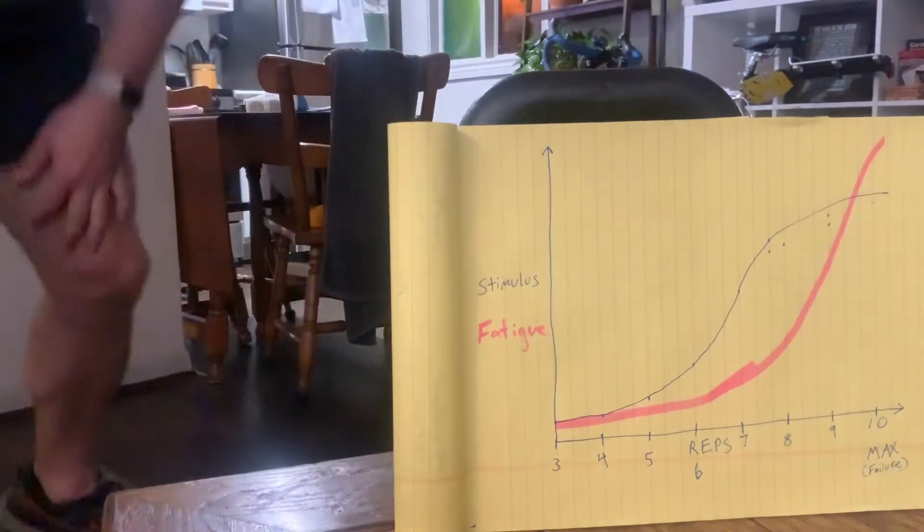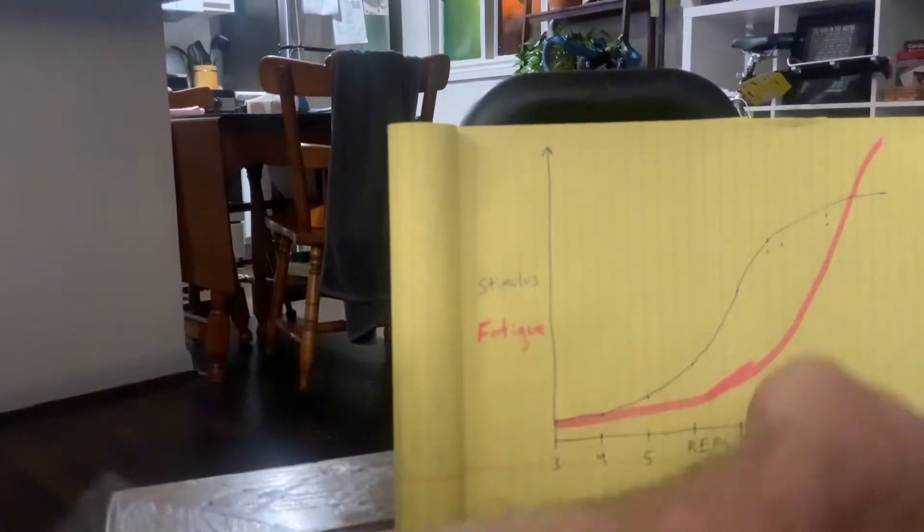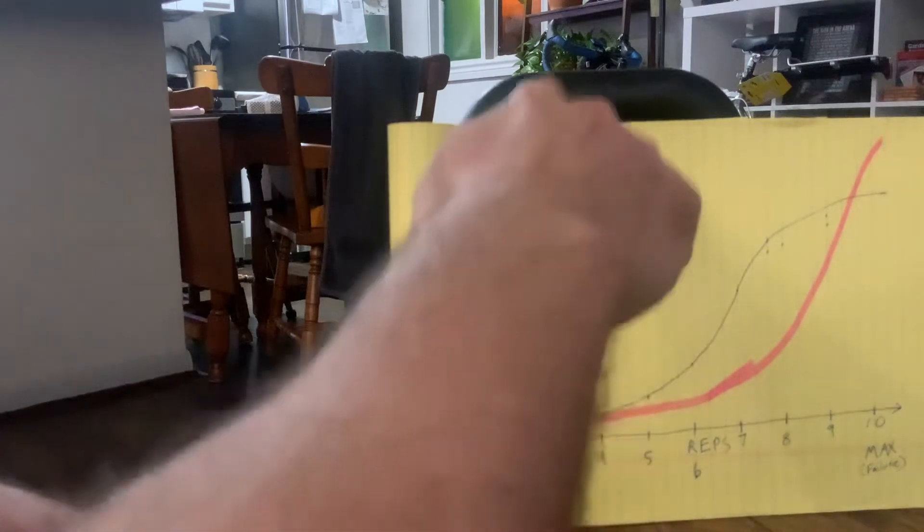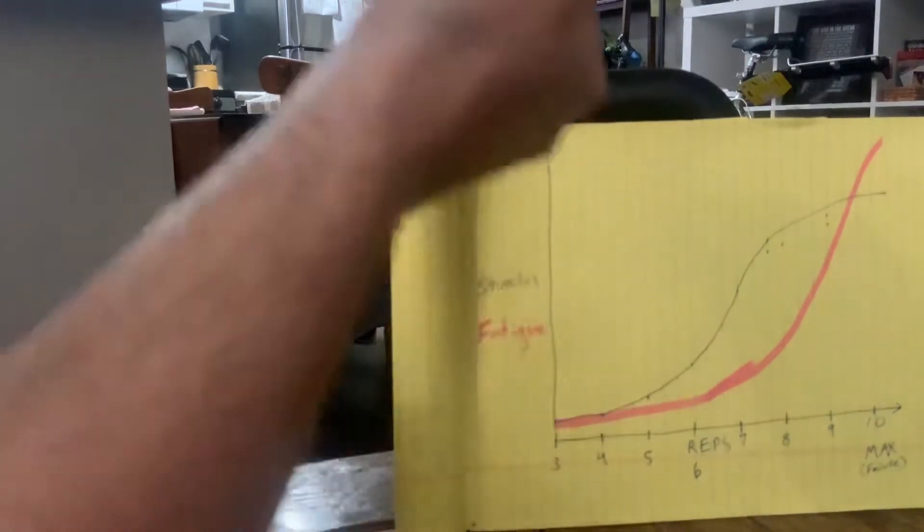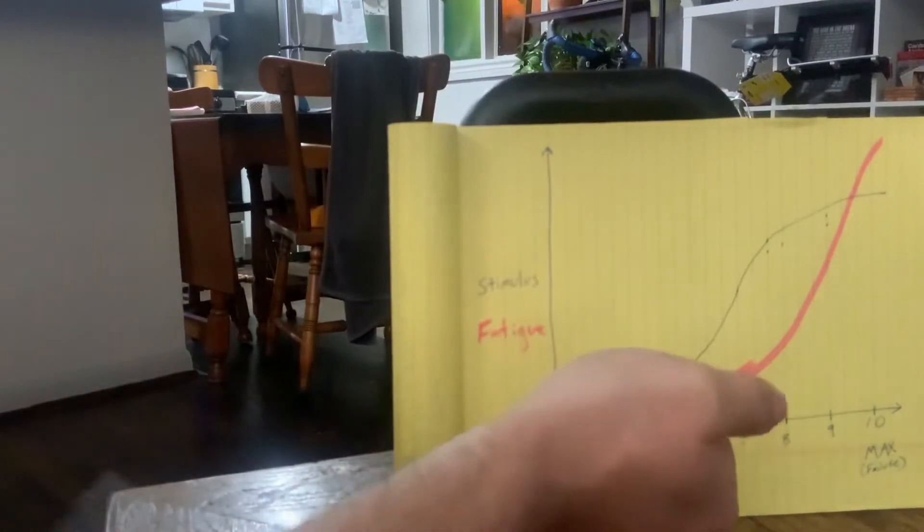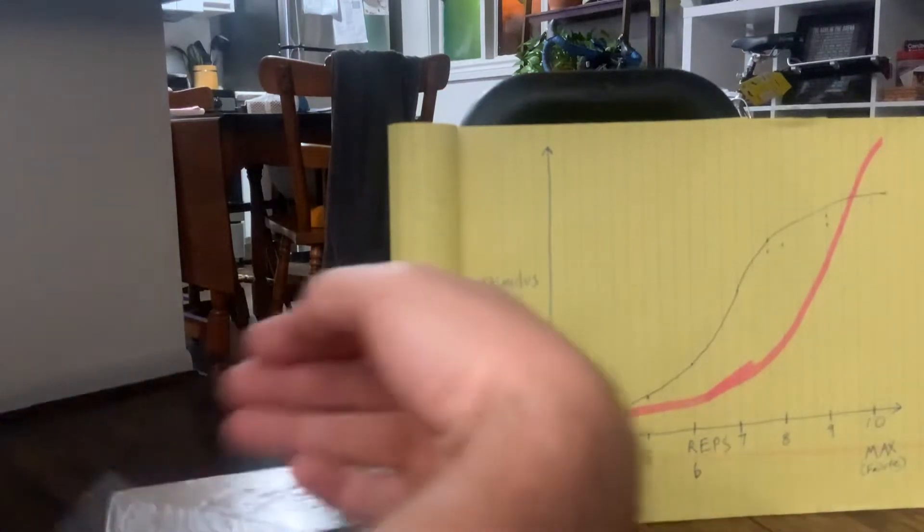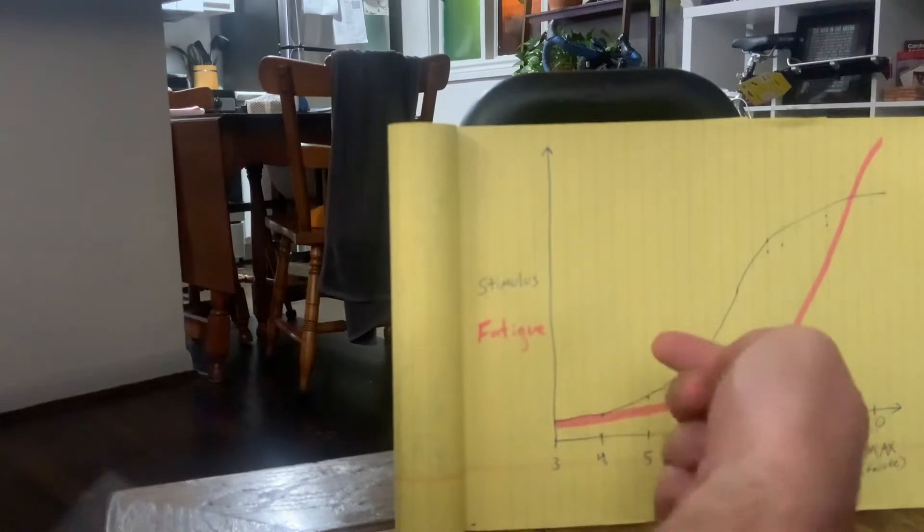So I got a little graph here, I'm gonna move off to the side so I can narrate. First ignore this red line, we're gonna be looking at this line right here. What we have here is on the vertical axis it'll be stimulus. So the higher up you go, the more stimulus you get. That's gonna be the signal for your body to grow, assuming that you're getting proper recovery and good diet and good sleep. That's gonna be what caused you to gain muscle.